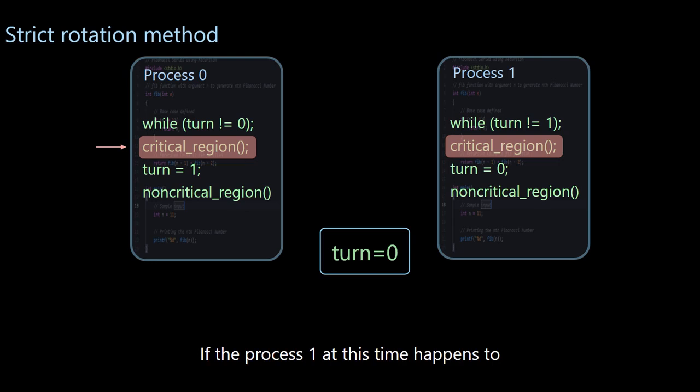If process 1 at this time happens to be in the first line and wants to enter the critical section, this while loop means that if the turn is not 1, keep waiting in a loop.